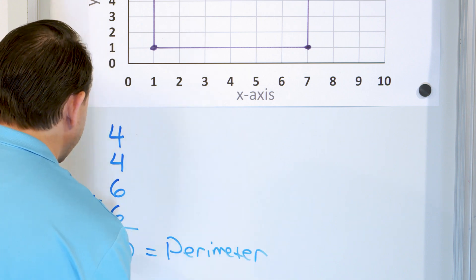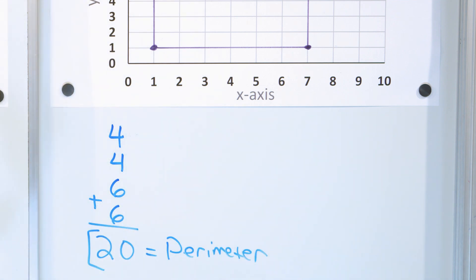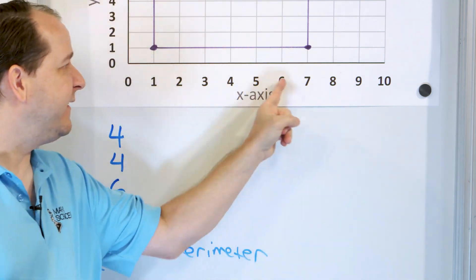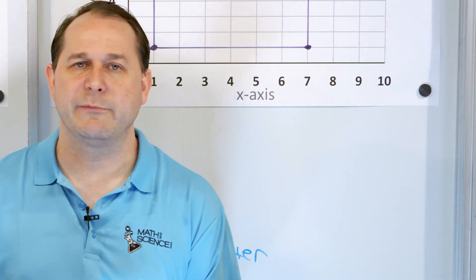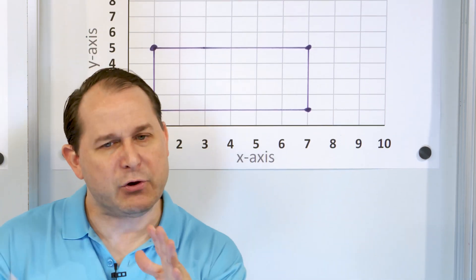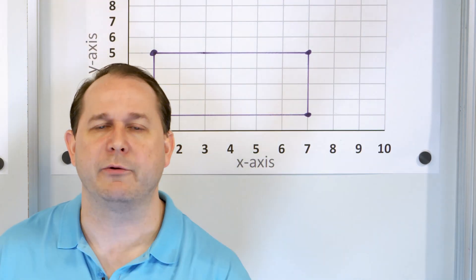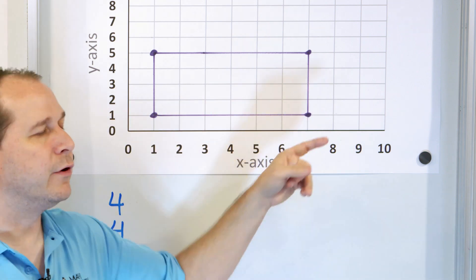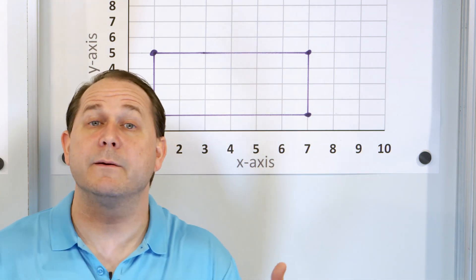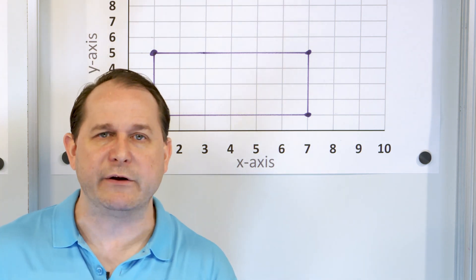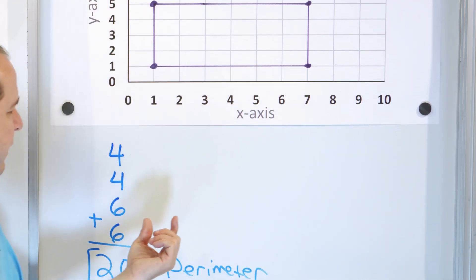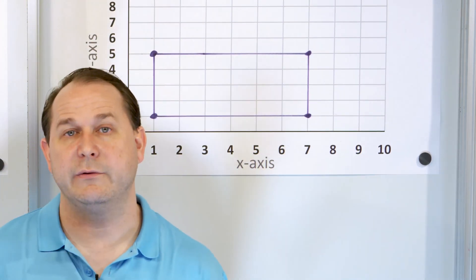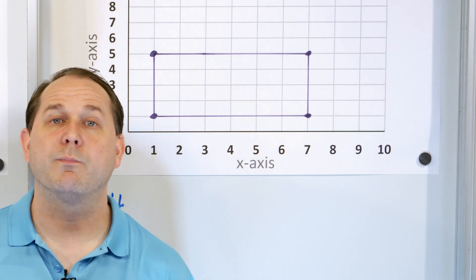Now, 20 what? Well, it depends what you're measuring. If you're measuring a gigantic city park and all distance units are in kilometers, then the perimeter is 20 kilometers. If you're making a quilt, it might be in centimeters or meters. The perimeter would be in whatever units you're measuring. So here I'll just leave it as perimeter equals 20.